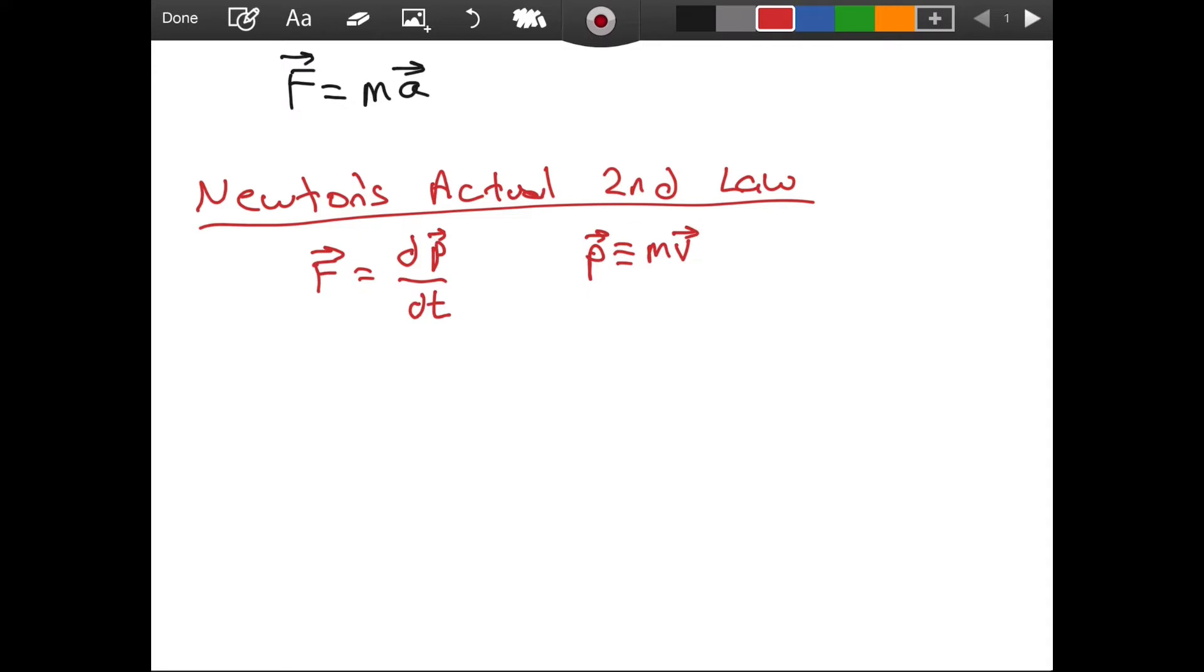So how can we use this actual law to prove the special case which most of us are more familiar with? Especially in elementary physics, we often use that F is equal to ma. So how can we prove it? The way that I will do is, I will first write the left side one more time. So F is equal to the derivative with respect to time, and instead of p, I am just going to write mass times the velocity. So we are interested in finding the time derivative of mass times velocity.